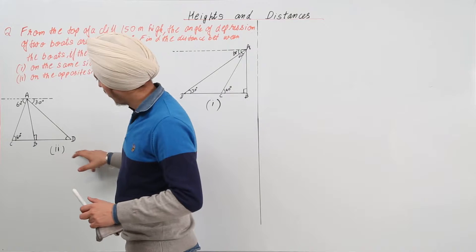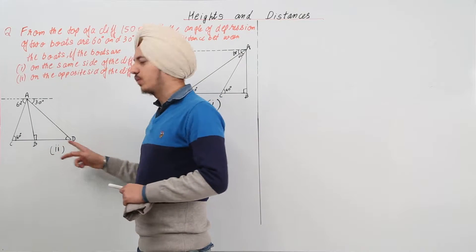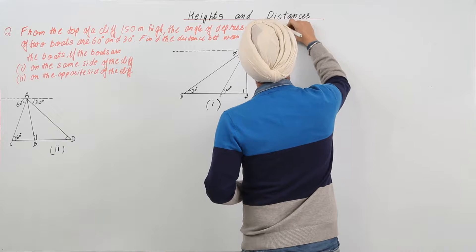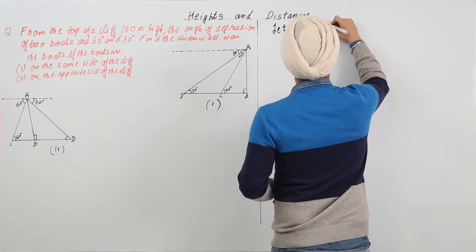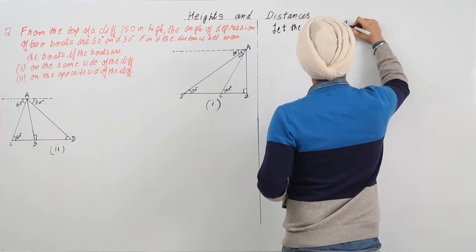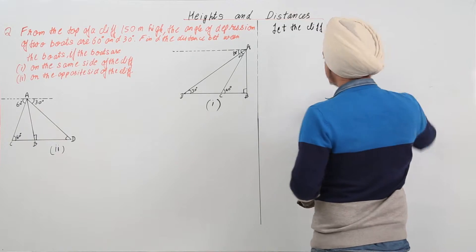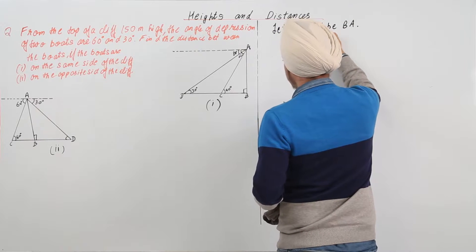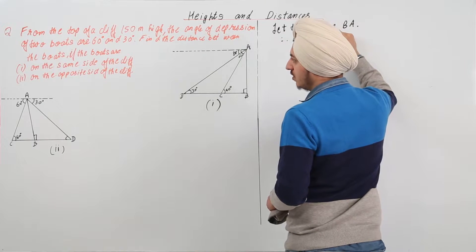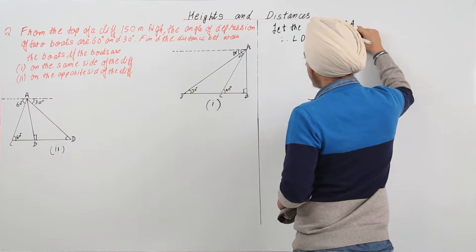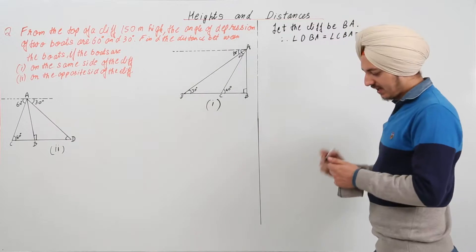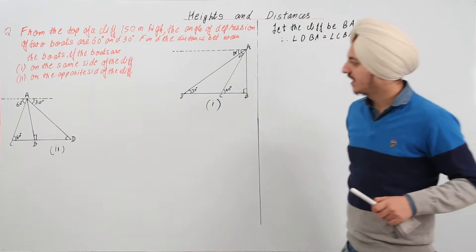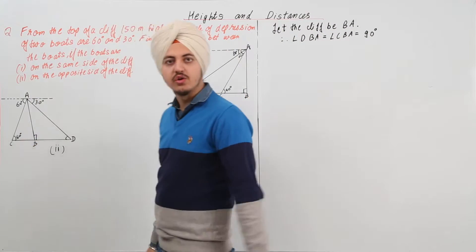In the second part, both boats are on opposite sides, but the scenario is the same — we need to find the distance between C and D. Since BA is perpendicular to the ground, angle DBA is equal to angle CBA is equal to 90 degrees. This holds for both figures.